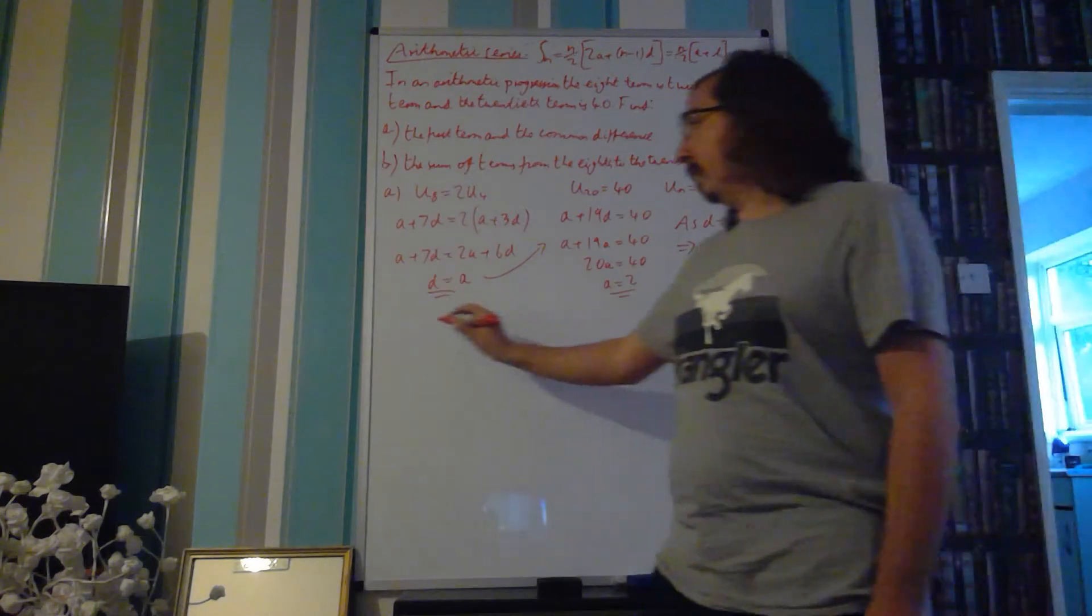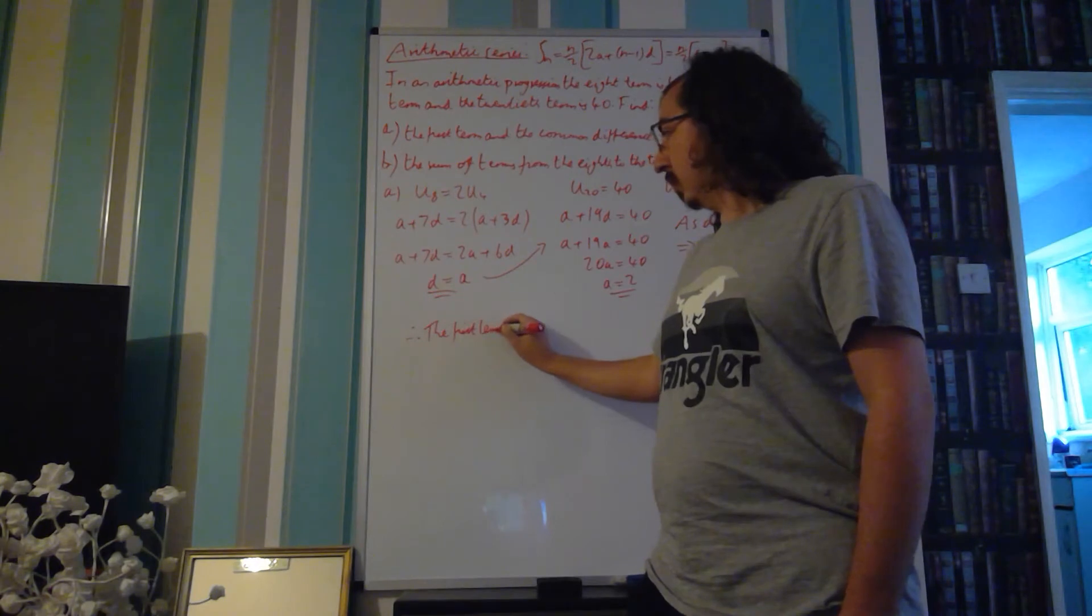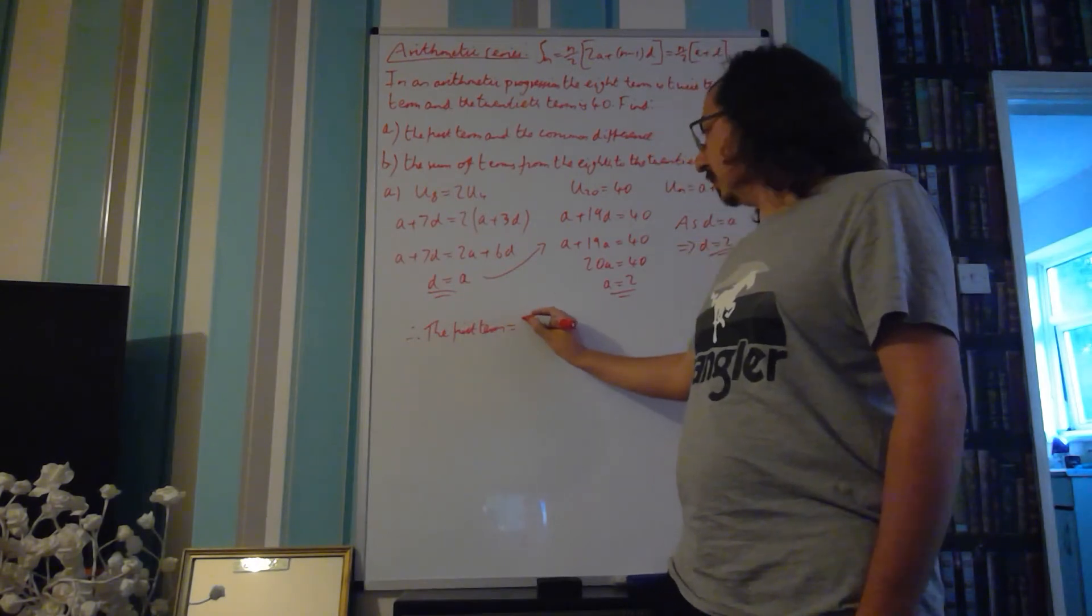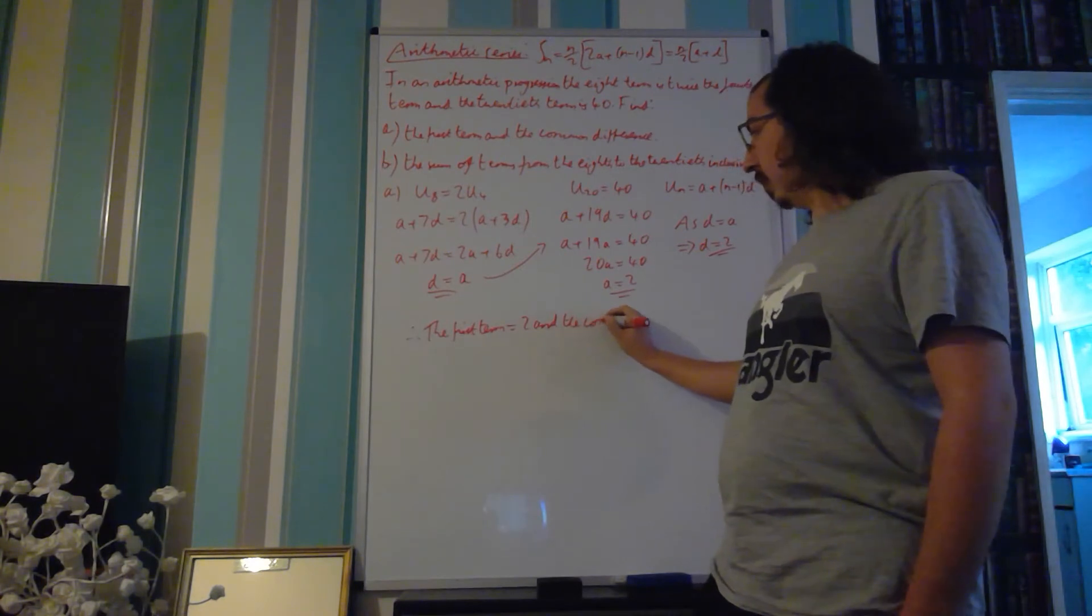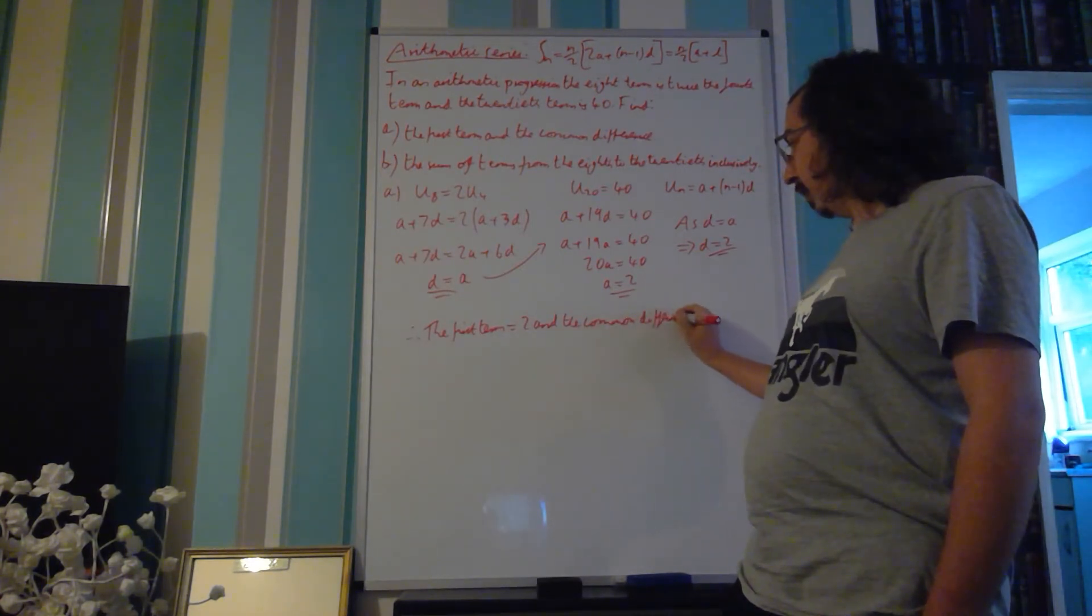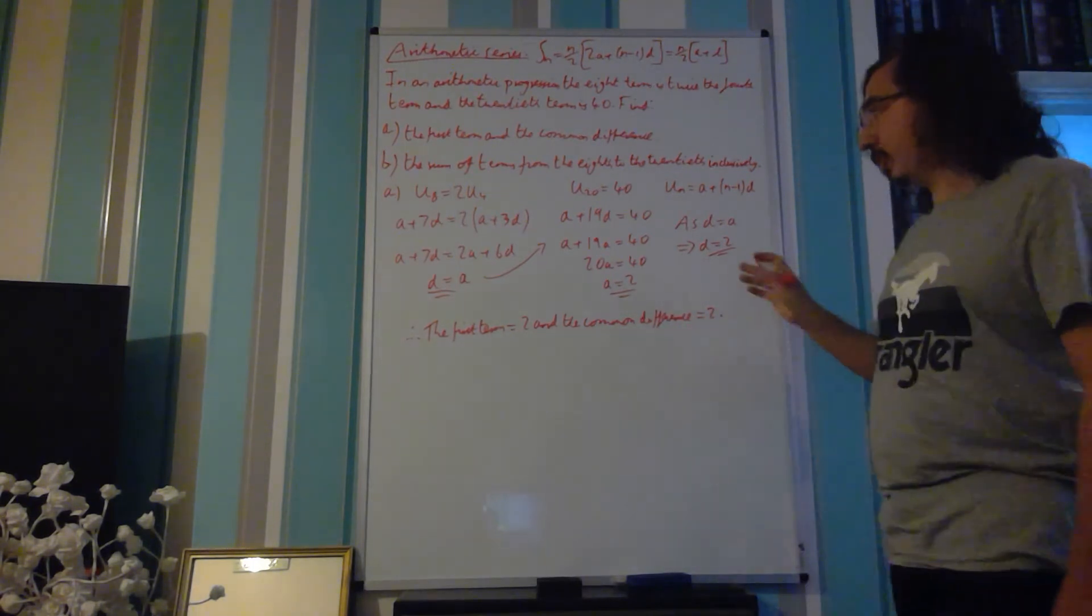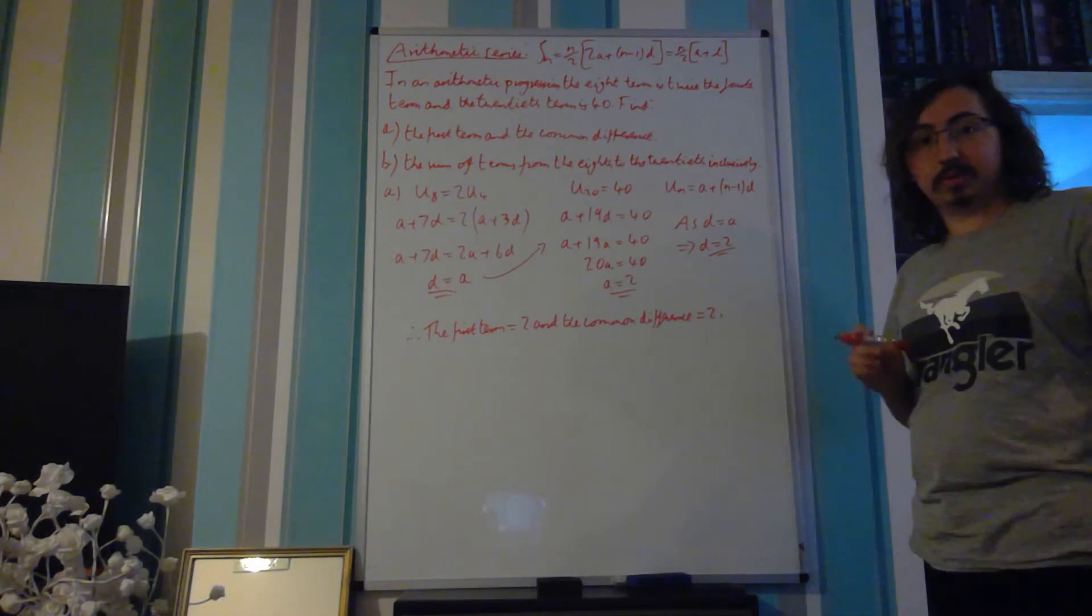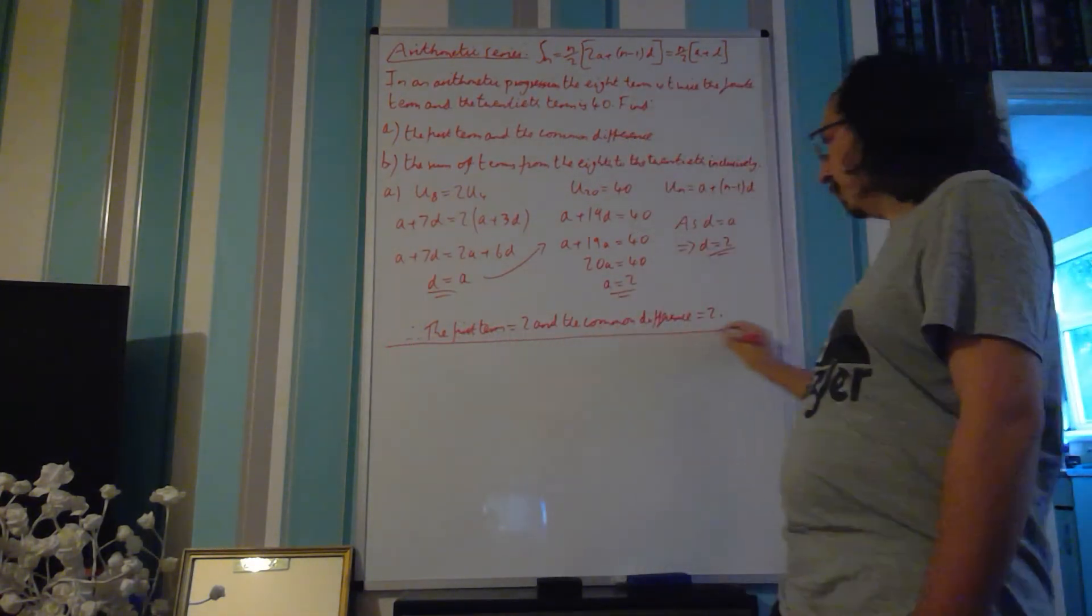So, therefore, the first term is equal to 2, and the common difference is equal to 2 as well. Both A and D are equal to 2 in this problem. So, that deals with part A.